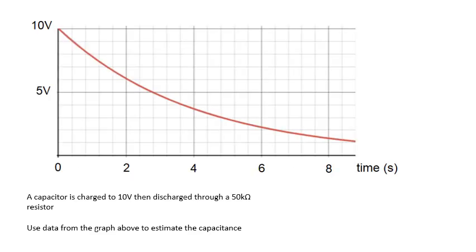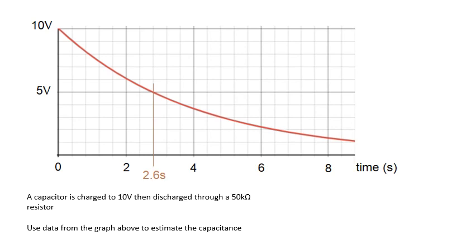Why do you want to get the time constant? Well, one reason might be to work out a capacitance, an unknown capacitance. Read this question, have a go at it. A capacitor is charged to 10 volts, then discharged to a 50k resistor. Use the data above to estimate the capacitance. Well, from the graph, I've got the half-life, because it's the time it takes to get from 10 to 5, 10 volts to 5 volts. The half-life is 2.6 seconds. So my time constant is 2.6 divided by log 2, which is 3.75 seconds. And if I divide that by the resistance, I've got the capacitance, 75 microfarads.